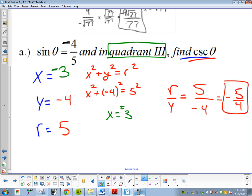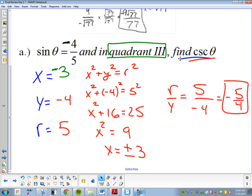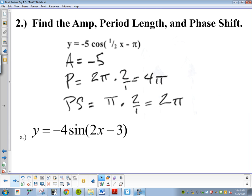Questions on the first one? How did I get three? Pythagorean theorem. I plugged in y and r. x squared plus 16 equals 25. I'd subtract 16. x equals plus or minus three. It's a negative three because we're in quadrant three.